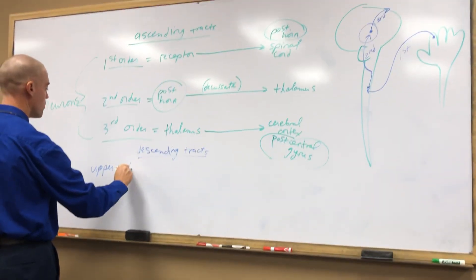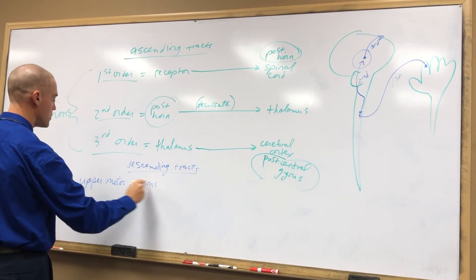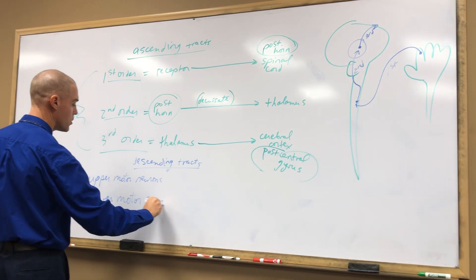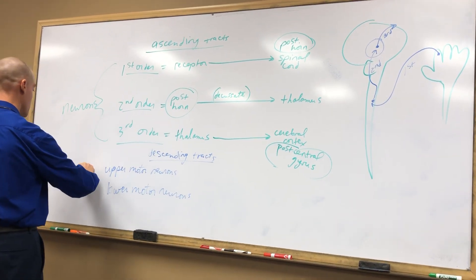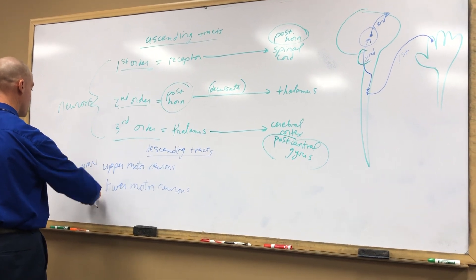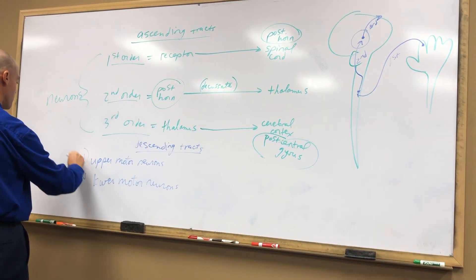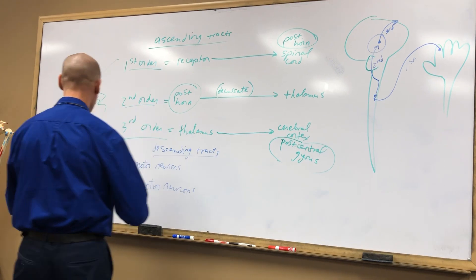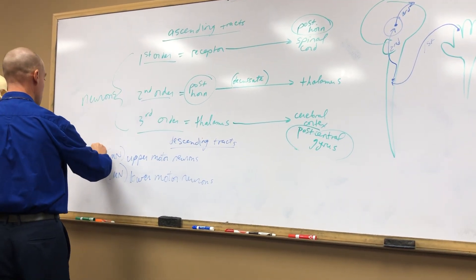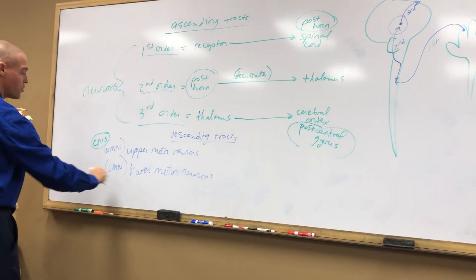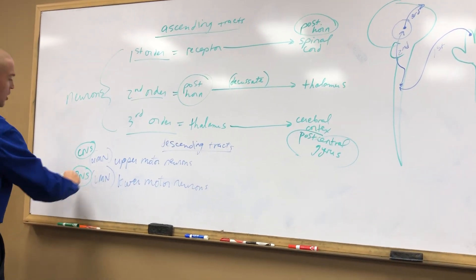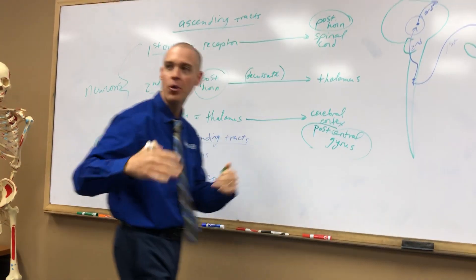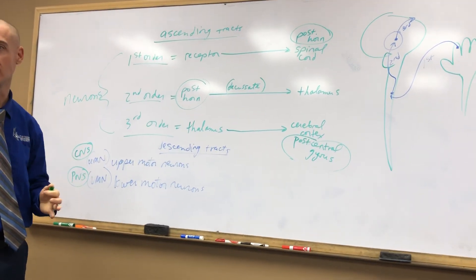These are called upper motor neurons and lower motor neurons — often abbreviated UMN and LMN. Upper motor neurons are entirely in your central nervous system. Lower motor neurons are entirely in the peripheral nervous system. So when you think upper motor neuron, think CNS; when you think lower motor neuron, think PNS.